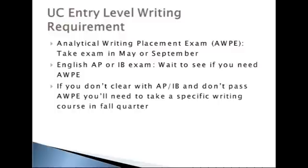You may have taken the Analytical Writing Placement Exam in May or will be taking it in September. If you take the exam in May, we get your results in June and will advise you accordingly. If you don't take the exam and wait until September, we'll advise you on options when you sign up for classes. If you took one of the English AP exams or an English IB exam, you can wait to take the Analytical Writing Placement Exam. Passing these exams clears you of the requirement.